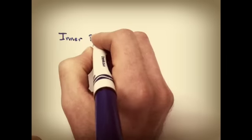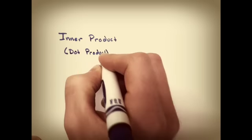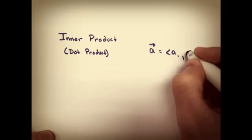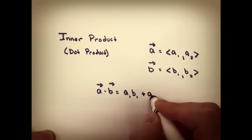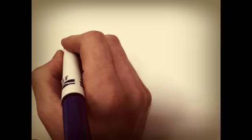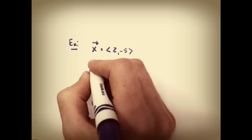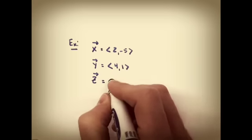We'll look at inner product first. Let's say I give you two vectors in two-dimensional space. Vector A is as written, vector B is as written. The inner product is simply going to be the product of your two x values times the product of your two y values. Look at an example.